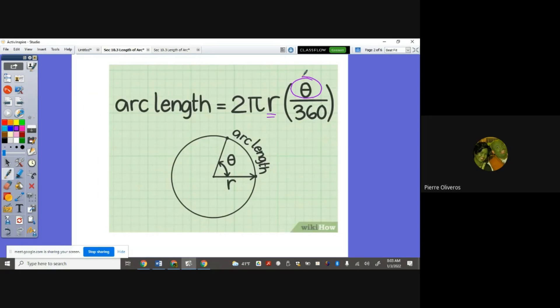So again, the formula for the arc length is 2πr times theta over 360.